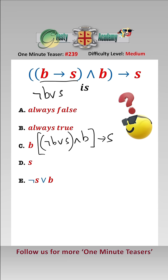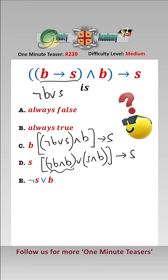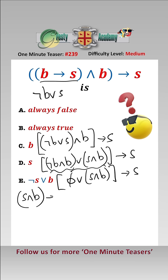By the distribution law, that becomes (not B and B) or (S and B implies S). Well, not B and B is clearly the empty set, so that gives us the empty set or (S and B implies S). The empty set or (S and B) is just S and B implies S.